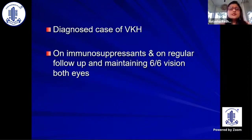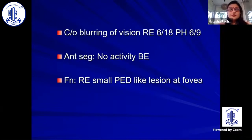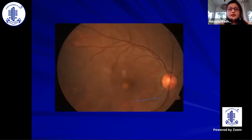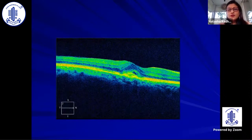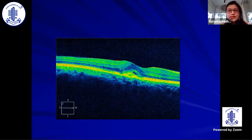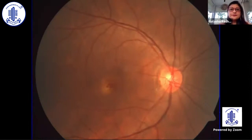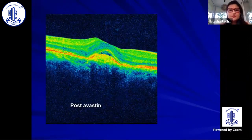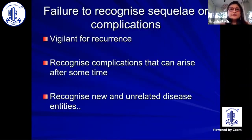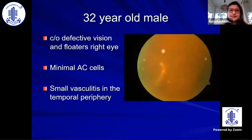A VKH patient on immunosuppression, with regular follow-up and 6/6 vision in both eyes, came with blurring of vision and a small PED-like lesion at the fovea. We might think it is a recurrence and increase immunosuppression, but what was actually happening was a choroidal neovascular membrane developing after the anti-inflammatory therapy had resolved. Late complications that are unrelated to recurrences also need to be recognized. Another patient post-bevacizumab resolved well after three-year abstinence. You have to be vigilant for recurrence, recognize complications arising after some time, and recognize new and unrelated disease entities.